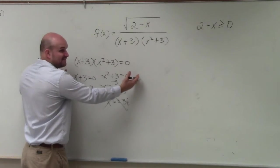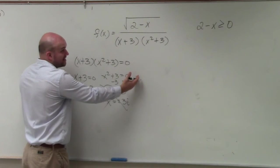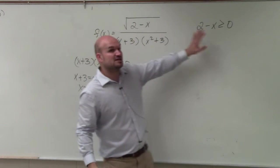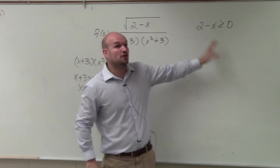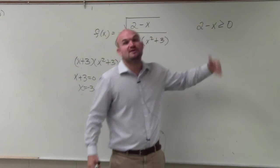Whatever numbers are in the denominator, you have to set equal to 0 and solve. Those numbers are not in our domain. Any number that's under a radical, you have to set greater or equal to 0. Those are the only values that are going to be in your domain.